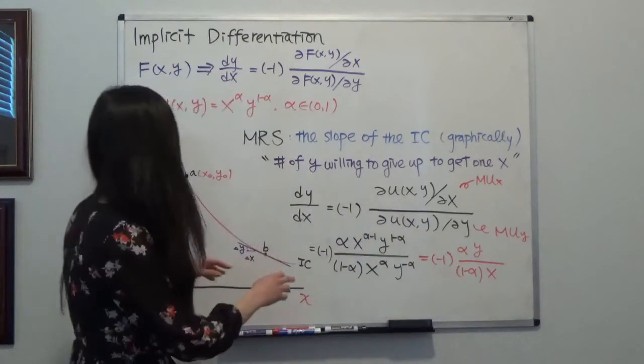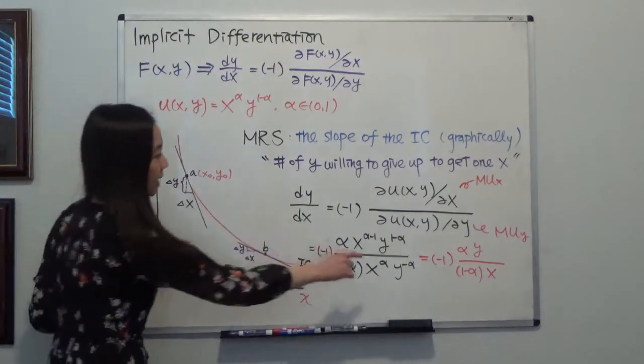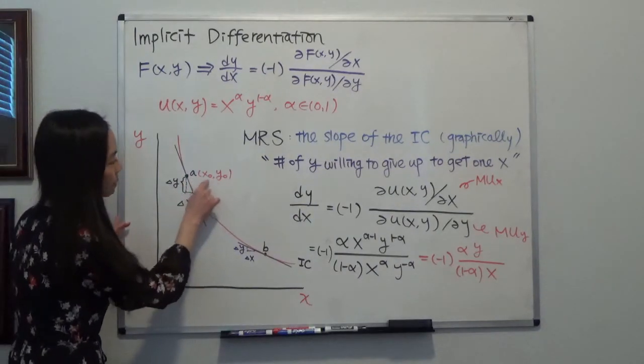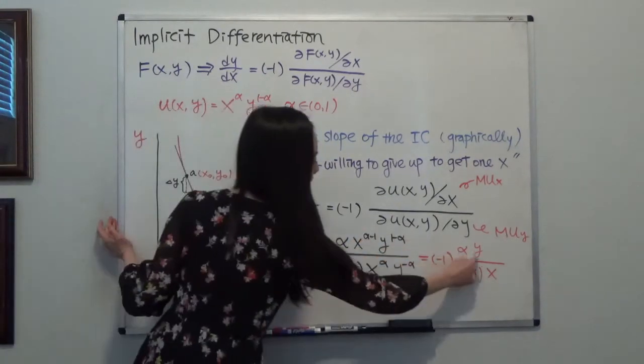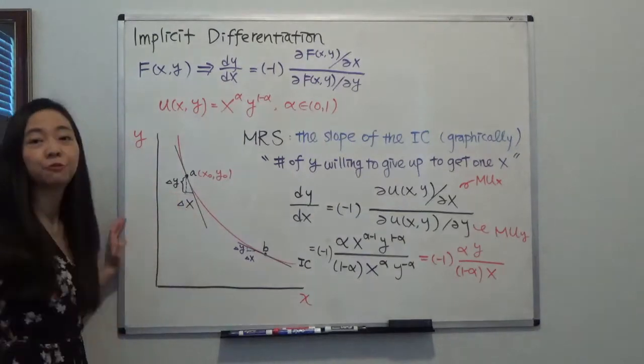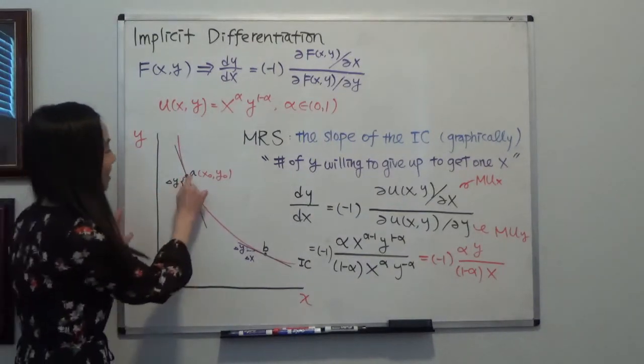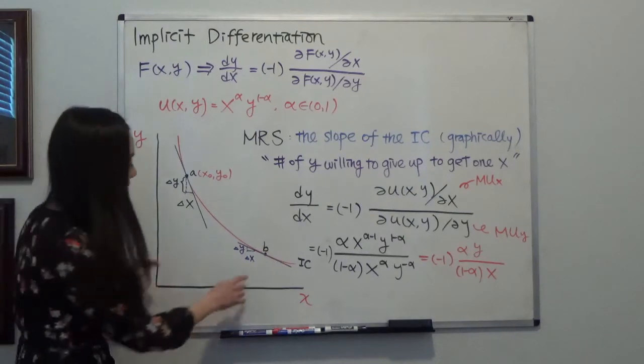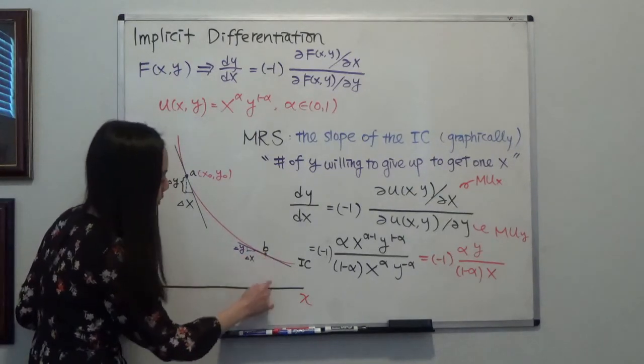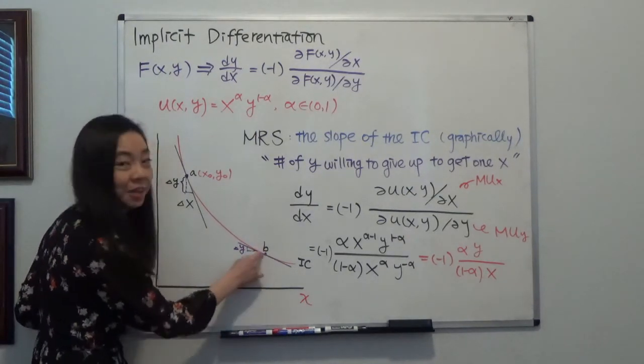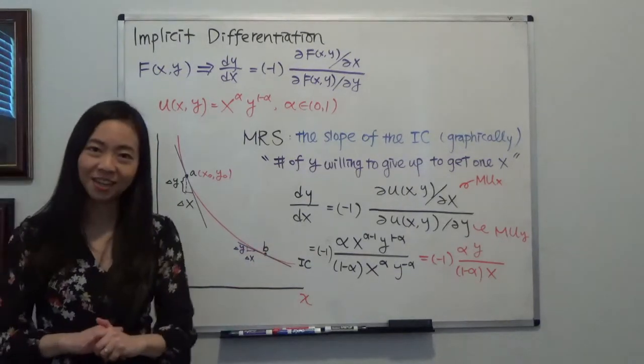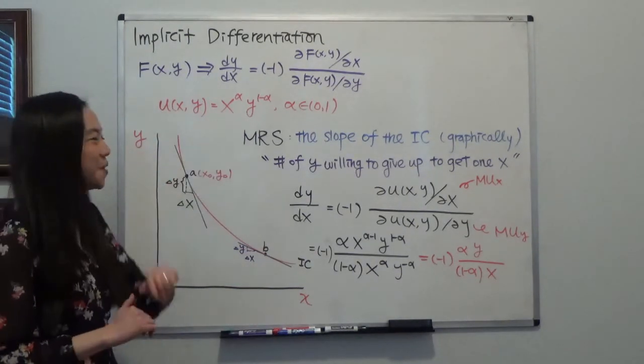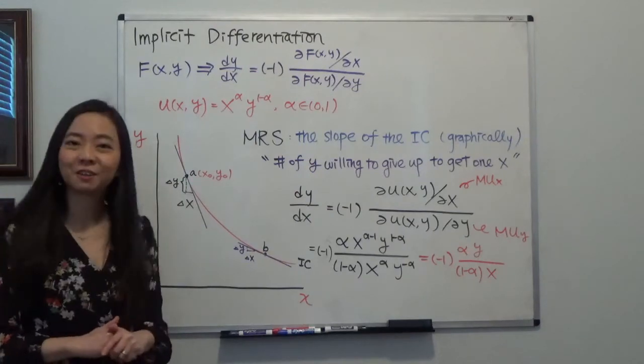And you can see that if I want to find the MRS at this point, then I'm just going to plug in my x0, y0 here. Then I will be able to find the marginal rate of substitution at this point. And if I want to find the marginal rate of substitution at this point, then I'm just going to plug in the corresponding x and y. So this is implicit differentiation with the application of Cobb-Douglas utility function.